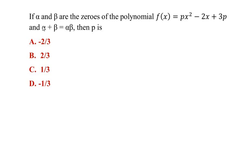Hello and welcome to my channel. In this video we are going to solve a multiple choice question on polynomials. If alpha and beta are the zeros of the polynomial f(x) = px² - 2x + 3p,